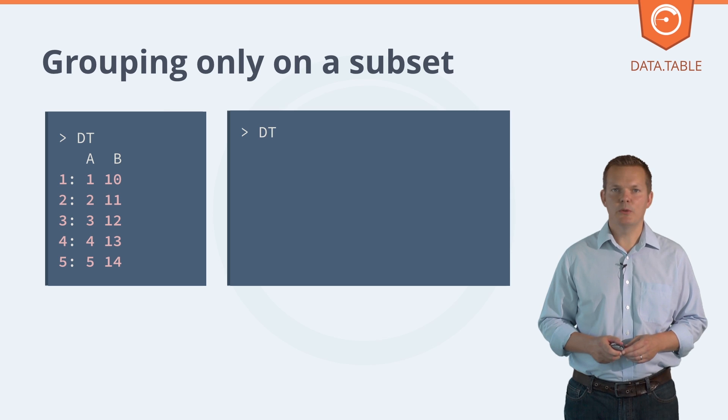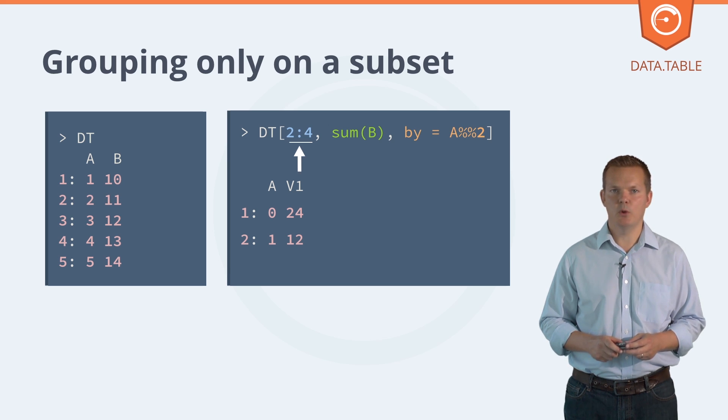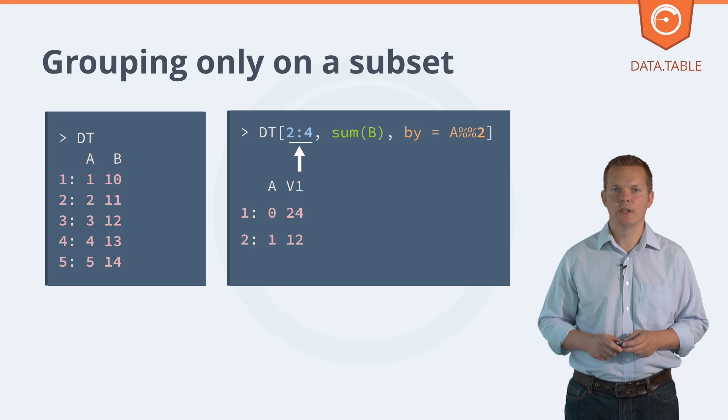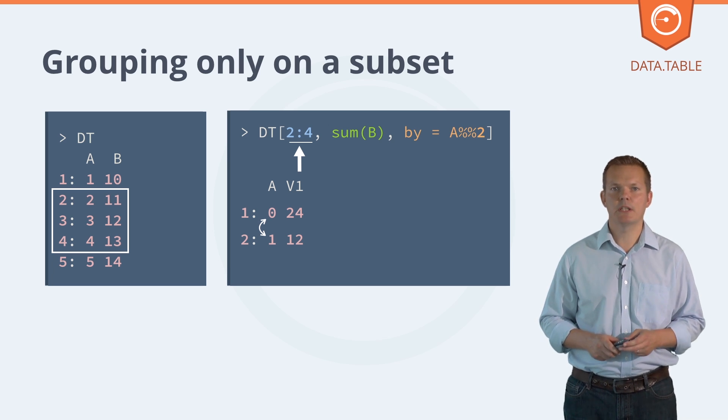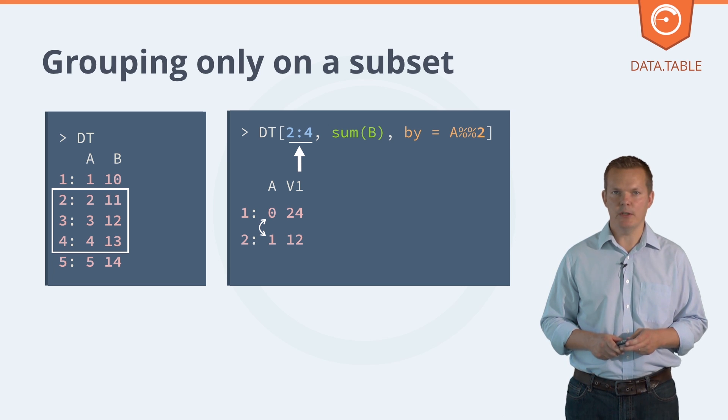We can pass a row subset into I as well. Here we're passing the row numbers 2, 3 and 4 into the I argument, and just doing the aggregation over those three rows. This time, the even numbers come back first in the answer because an even number occurs first in the subset of rows of dt that we're aggregating over.